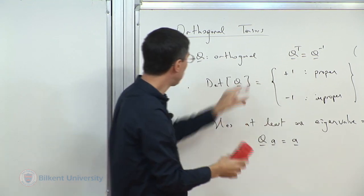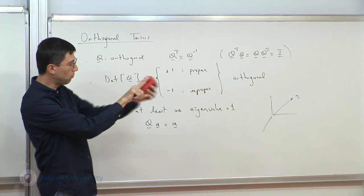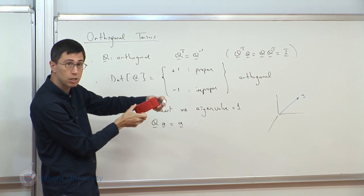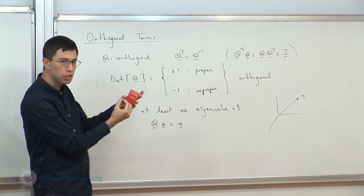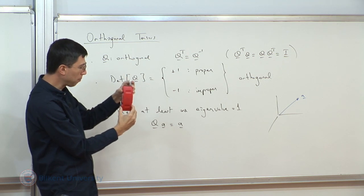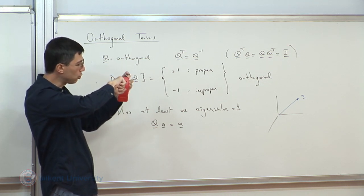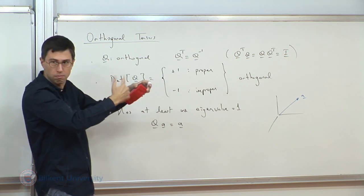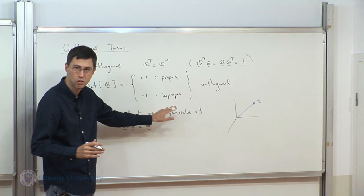Once you know where vectors go, you can redraw the object. If A is the axis of rotation, and you take another vector v, then Q acting on v gives a new vector v prime. Because A is the axis of rotation, the vector rotates about that axis. The amount of rotation determines the new look of the vector, and that is v prime. A proper orthogonal tensor corresponds intrinsically to a physical rotation.